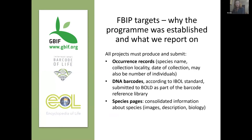Whatever you do for FBIP projects, it has to produce occurrence records — that's the species name, collection, locality, date of collection, and maybe the number of individuals. It also has to produce DNA barcodes, according to the iBOL standard, and those must be submitted to BOLD as part of the barcode reference library. And then species pages — this is consolidated information about species: images, description, biology. The reason we have those three outputs is because when we set up the FBIP, it was to cover agreements that South Africa has with GBIF — the Global Biodiversity Information Facility — and with the Barcode of Life, the International Barcode of Life.